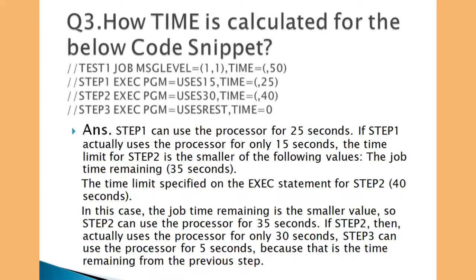Looking at the answer: step one can use the processor for 25 seconds. If step one actually uses the processor for only 15 seconds, the time limit for step two is the smaller of the following values — the job time remaining, which is 35 seconds, or the time limit specified on the EXEC statement for step two, which is 40 seconds. In this case, the job time remaining is the smaller value, so step two can use the processor for 35 seconds.